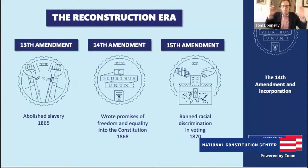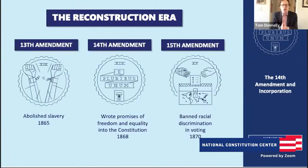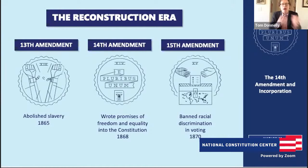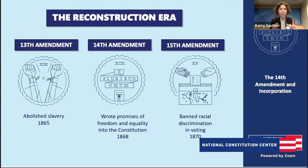The 14th is part of an amazing trilogy of transformational amendments added to the Constitution after the Civil War, all meant to place the United States on a new constitutional foundation. The 13th Amendment, ratified in 1865, abolishes slavery. The 14th Amendment, ratified in 1868, promotes freedom and equality. And the 15th Amendment, ratified in 1870, promises to ban racial discrimination in voting. The big connecting idea is eradicating slavery and promising equal citizenship for African Americans after the Civil War.